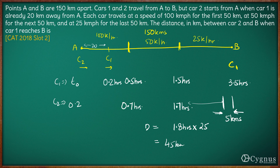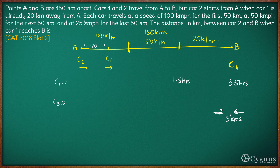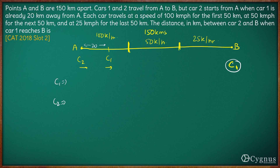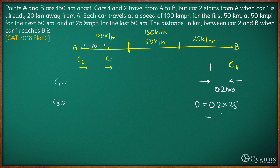There is a shorter way to do the same question. We figured out that Car 2 starts 0.2 hours after Car 1. The time difference between the two cars is 0.2 hours. Since the whole journey is exactly the same for both cars, the time difference for reaching any point will always be 0.2 hours. When Car 1 reaches B, Car 2 will be 0.2 hours behind, traveling at 25 kilometers per hour, covering 0.2 times 25 equals 5 kilometers.